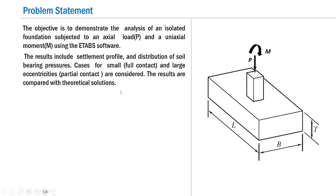The results obtained from the ETAPS software include the settlement profile and the distribution of soil bearing pressures. We'll specifically consider two cases: one corresponding to a small eccentricity resulting in full contact, and a large eccentricity resulting in partial contact. The ETAPS results are then compared with theoretical solutions for both cases.